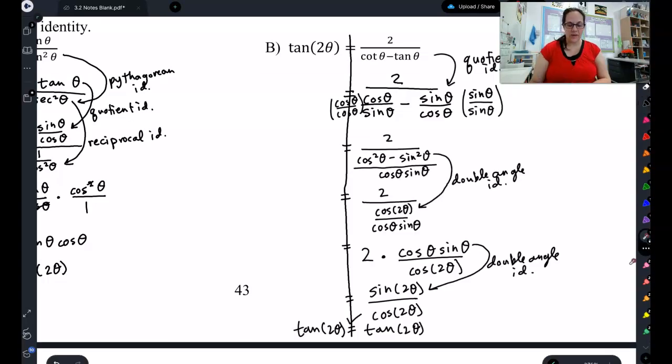Let's check your work. Like I said, change cotangent to cosine over sine, tangent to sine over cosine, and then find a common denominator. I multiplied this one by sine over sine, and this one by cosine over cosine to get a common denominator of cosine sine. On top, I get cosine squared minus sine squared.